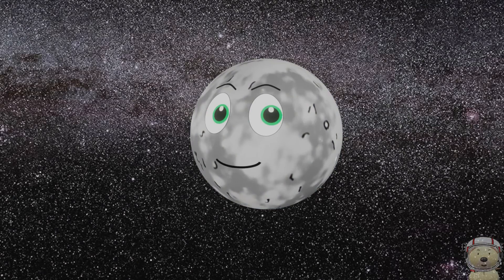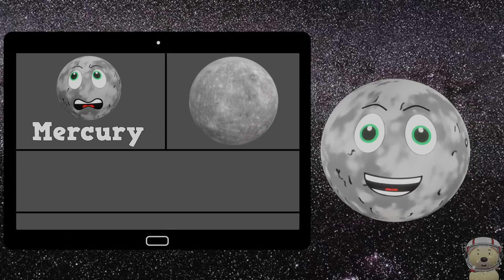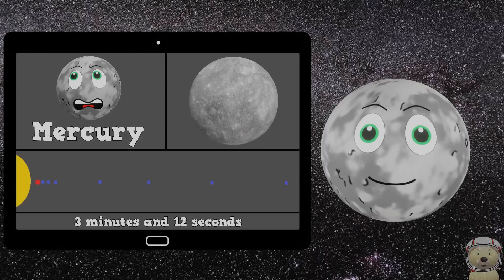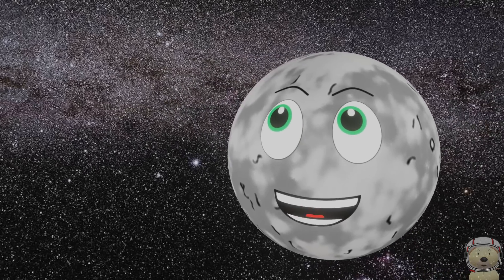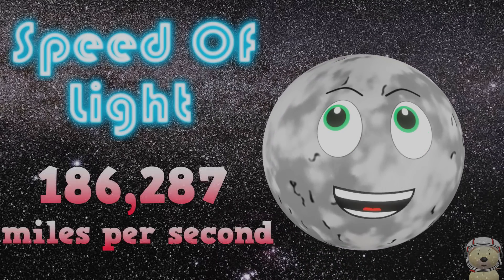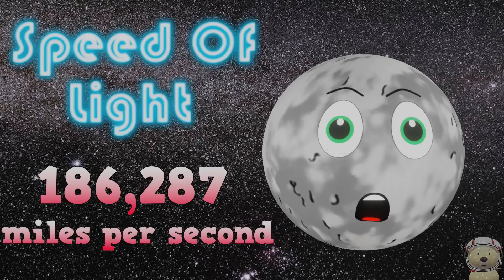Hey, I'm Mercury. It takes just over three minutes for sunlight from the Sun to hit me. That doesn't sound like much, but remember, sunlight is moving at the speed of light. That is 186,287 miles per second.